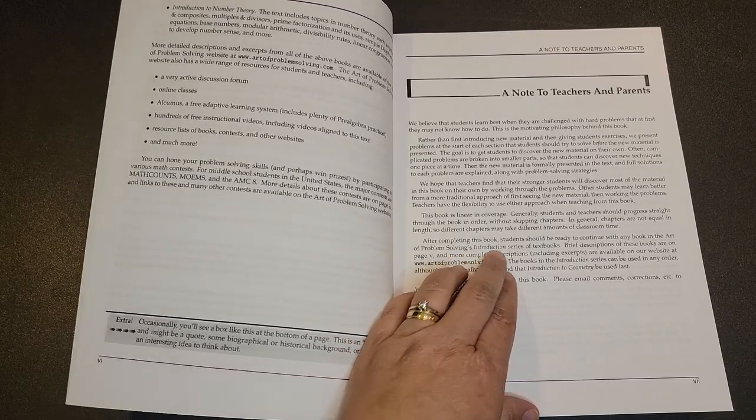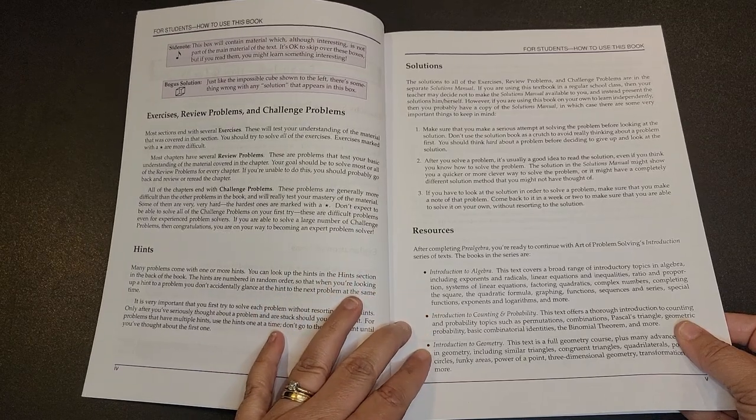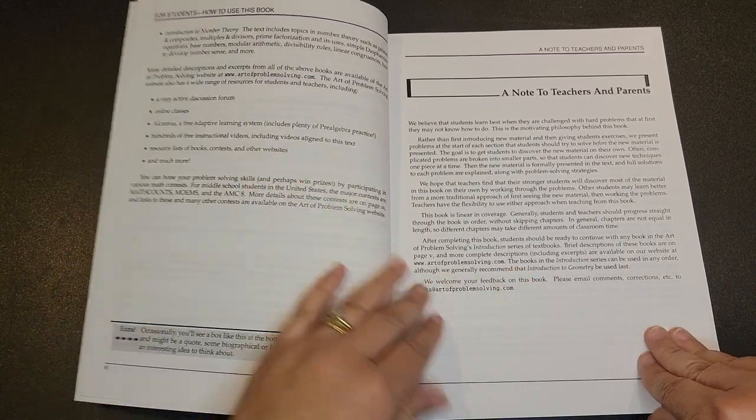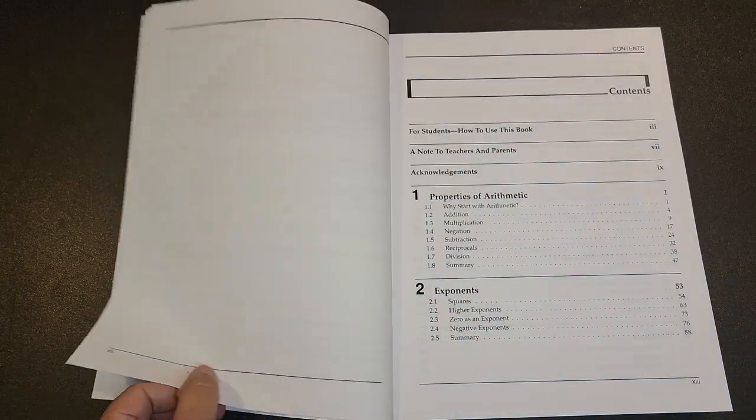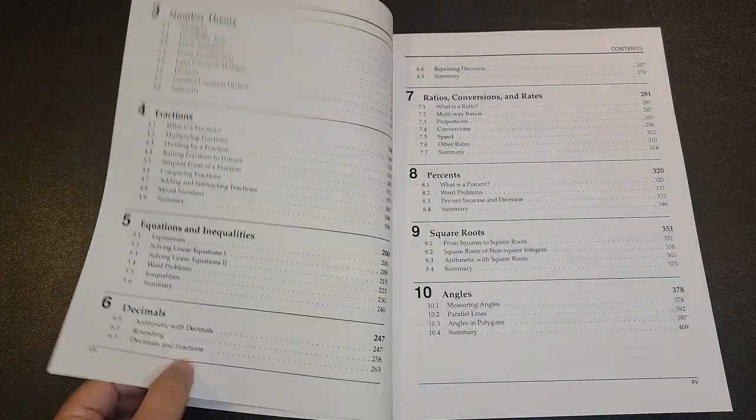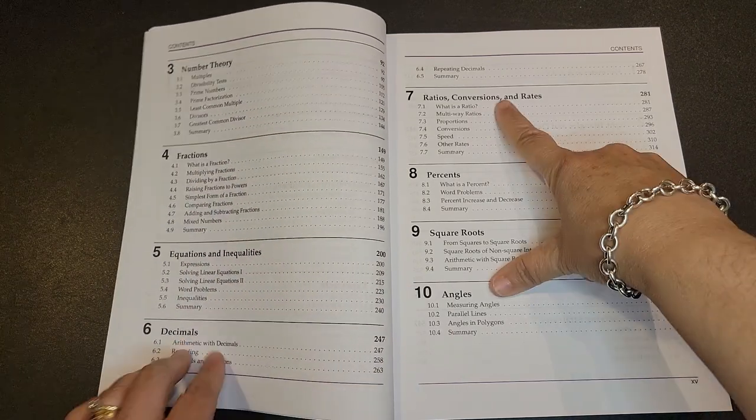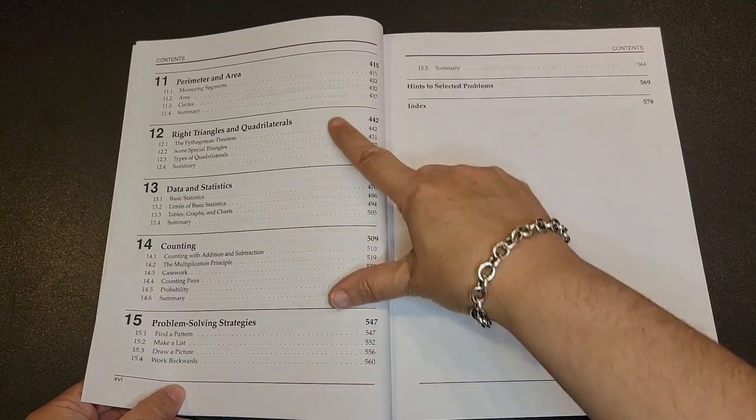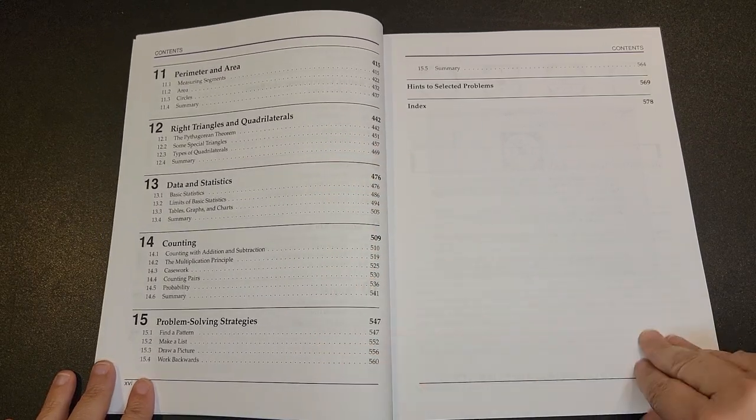After completing this book, students should be ready to continue with any book in the Art of Problem Solving's introduction series of textbooks: Introduction to Algebra, Introduction to Counting and Probability, Introduction to Geometry, and Introduction to Number Theory. This is something that is very different than what we have seen before. What you are going to cover: properties of arithmetic, exponents, number theory, fractions, equations and inequalities, decimals, ratios, conversions and rates, percents, square roots and angles, perimeter and area, right triangles and quadrilaterals, data and statistics, counting, and problem solving strategies.